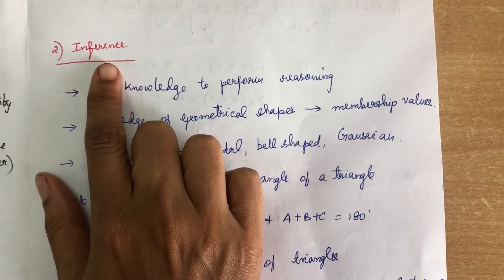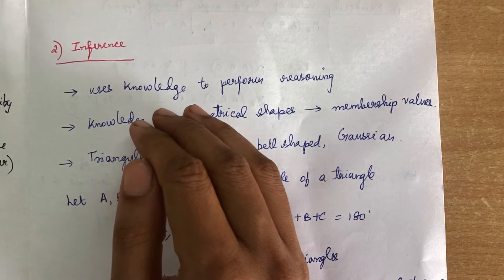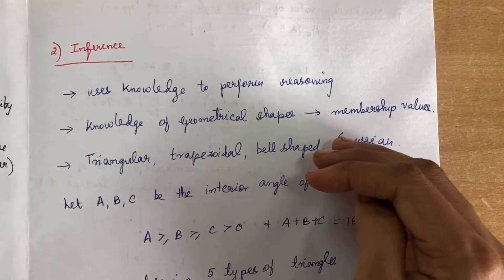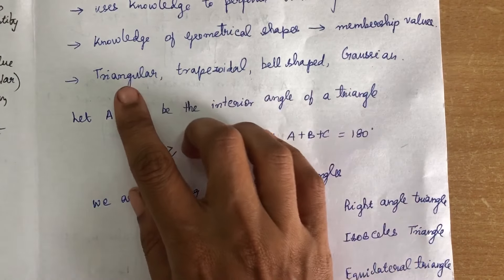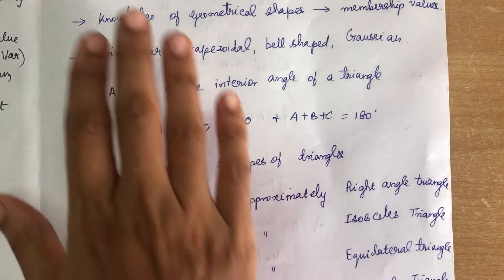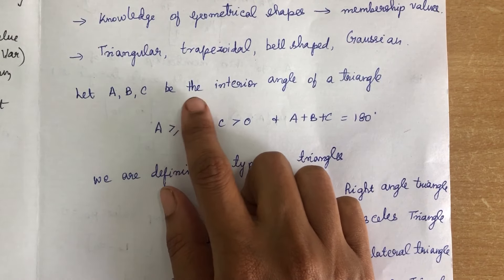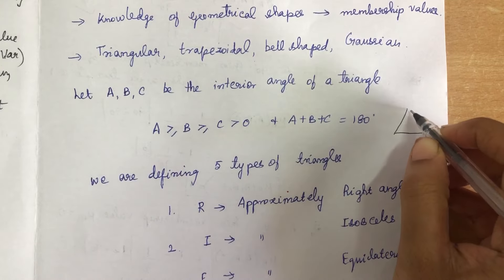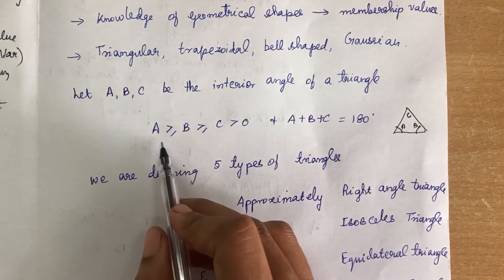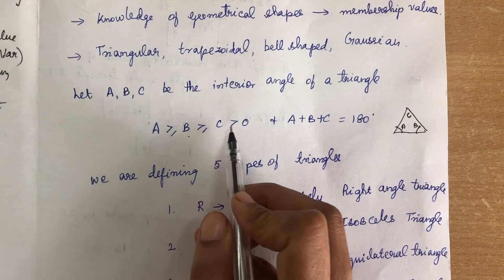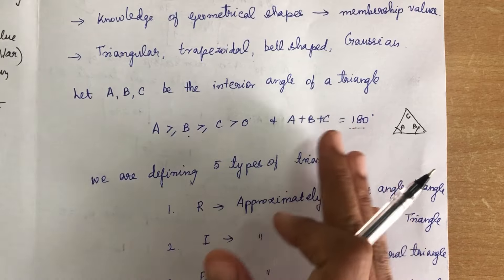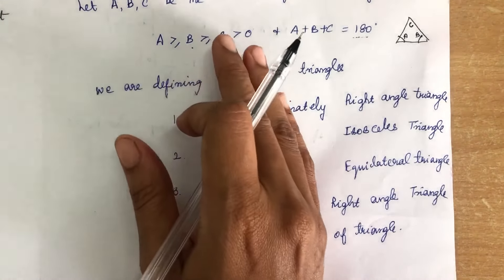The second method is the inference method. In the inference method, we use knowledge of geometrical shapes to perform reasoning and draw membership functions to find membership values. We know several membership functions — triangular, trapezoidal, bell-shaped, Gaussian — but in the inference method, we take the triangle alone. We consider ABC as the interior angles of a triangle, with the condition: A > B > C > 0, and A + B + C = 180 degrees.